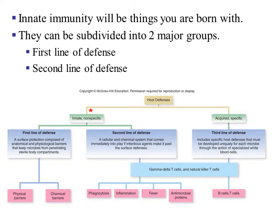This system can be subdivided into two major groups: the first line of defense and the second line of defense. Looking at the concept map, we start with the host defenses — your immune system — separated into the innate portion, what you were born with, and the acquired portion, what you develop as you get older. In this slide show, we will only talk about the innate immune response, which is nonspecific and further subdivided into the first and second line of defense.